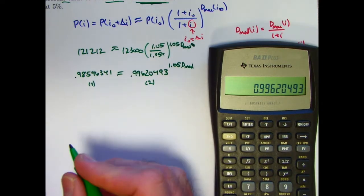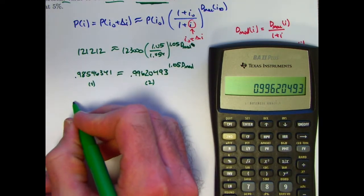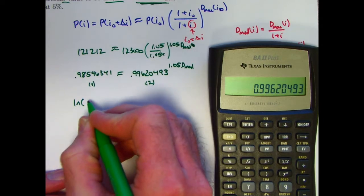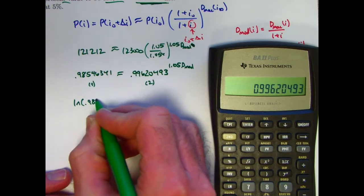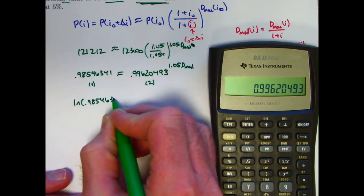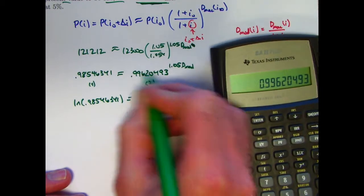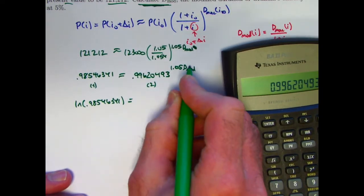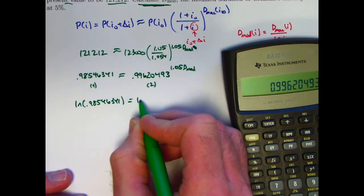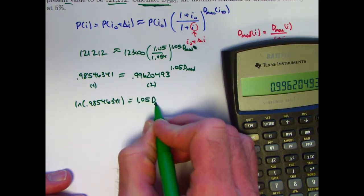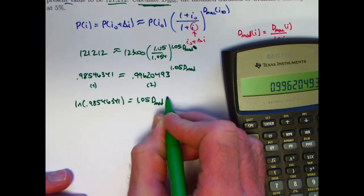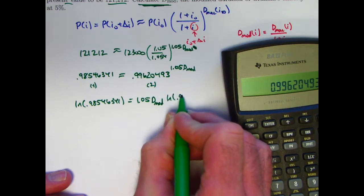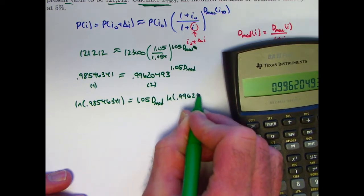Now you need to take logarithms of both sides and use properties of logarithms. The log of this thing, 0.98546341, would be the log of the right hand side. But by a property of logarithms, you can bring that power down in front. 1.05 times the modified duration times the natural log of 0.99620493.